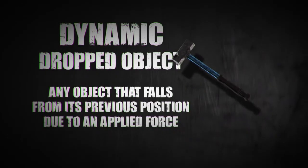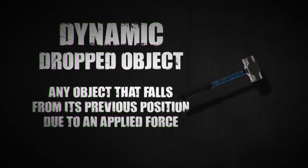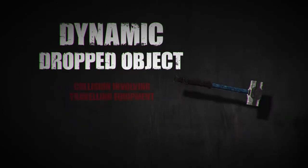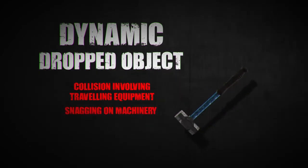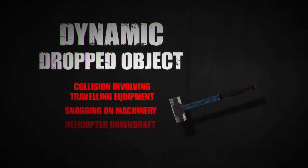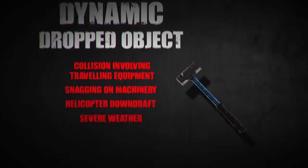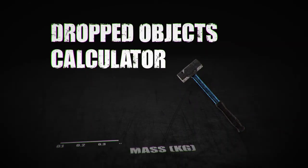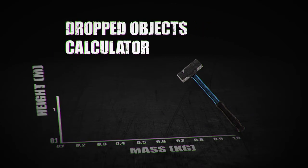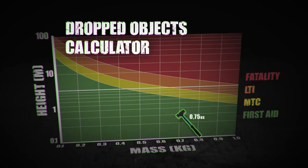The second category is a dynamic dropped object. This is any object that falls from its previous position due to an applied force — for example, a collision involving travelling equipment, snagging on machinery, helicopter downdraft, or severe weather. The dropped object calculator is used to plot the mass of a dropped object against the distance it falls to determine the potential severity of the consequences.